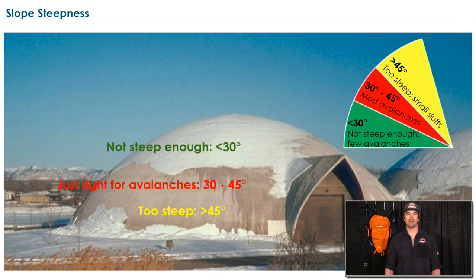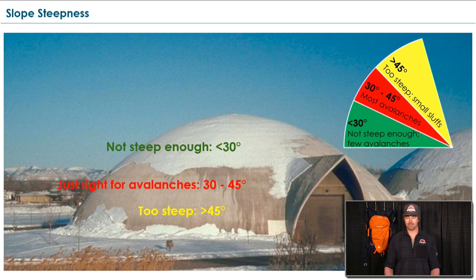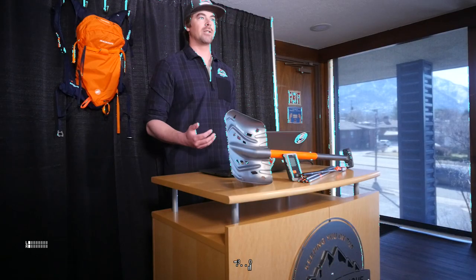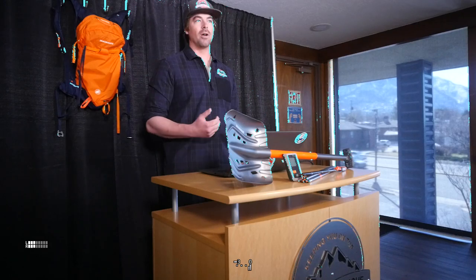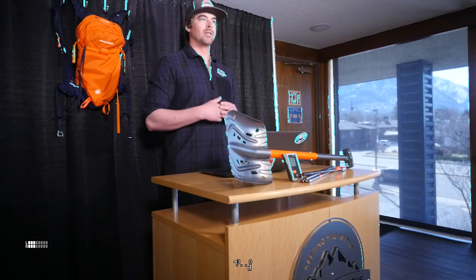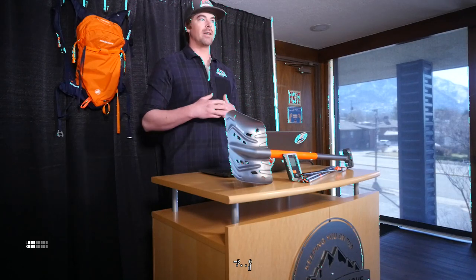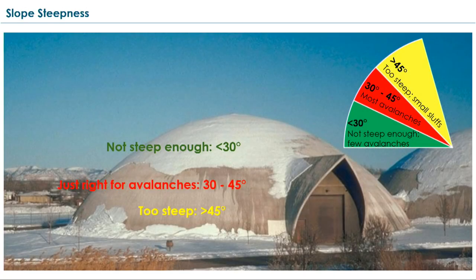Let's talk about slope angle. Slope angle is going to be your friend when you're thinking about avalanche terrain. Slopes over 45 degrees in steepness are often too steep for a slab to form and for an avalanche to occur. Slopes under 30 degrees generally don't avalanche because there's just not enough energy for that slab to pull down the hill. Slopes between those two zones — 30 and 45 degrees — is prime avalanche terrain. Unfortunately, those are the slopes we really like to ski.